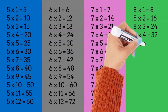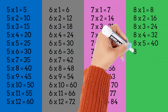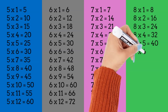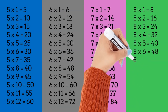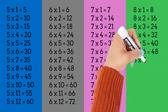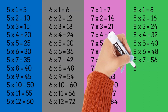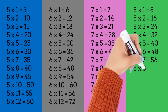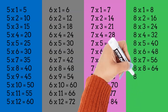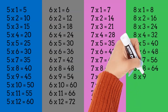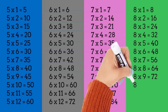8 times 5 is equal to 40. 8 times 6 is equal to 48. 8 times 7 is equal to 56. 8 times 8 is equal to 64. 8 times 9 is equal to 72.